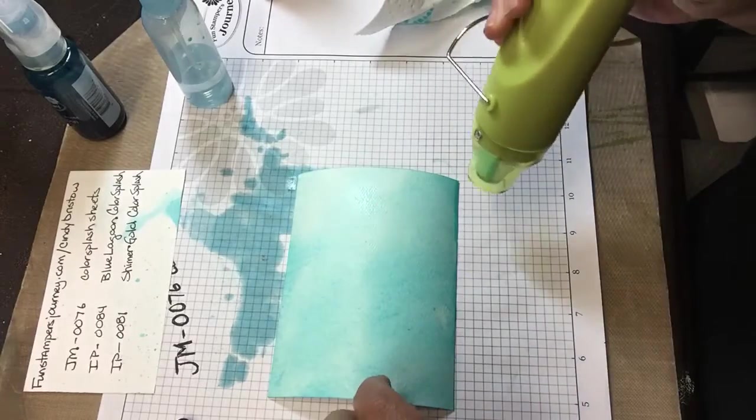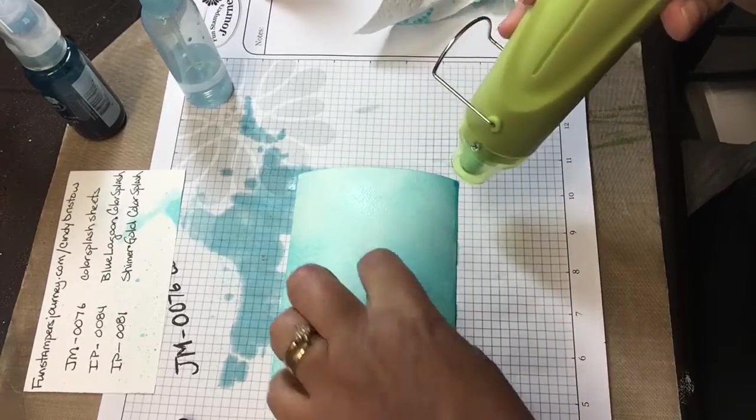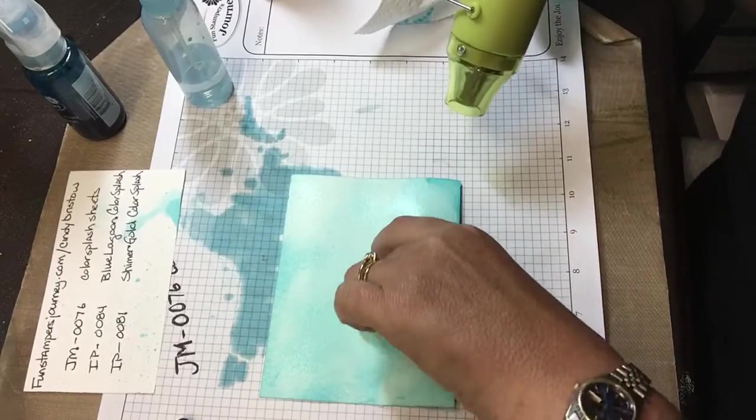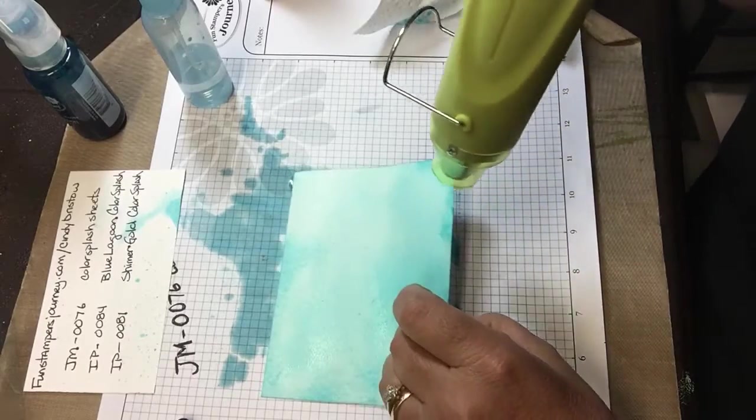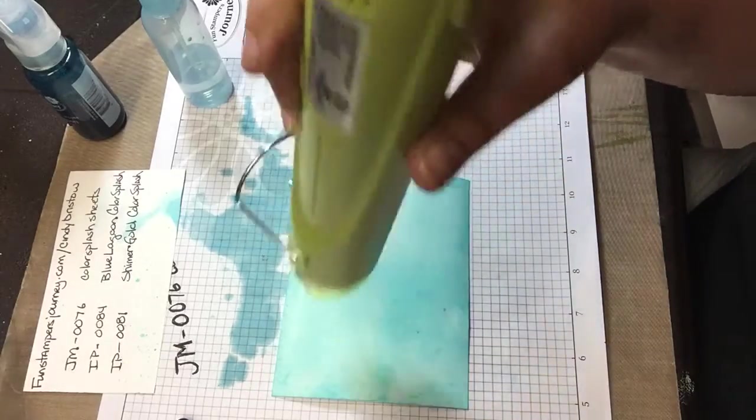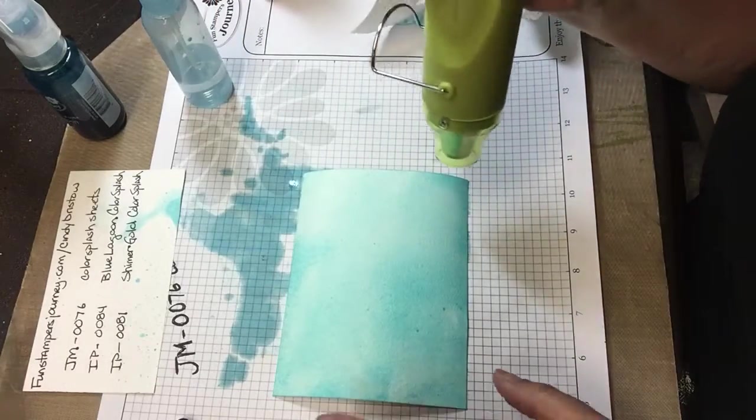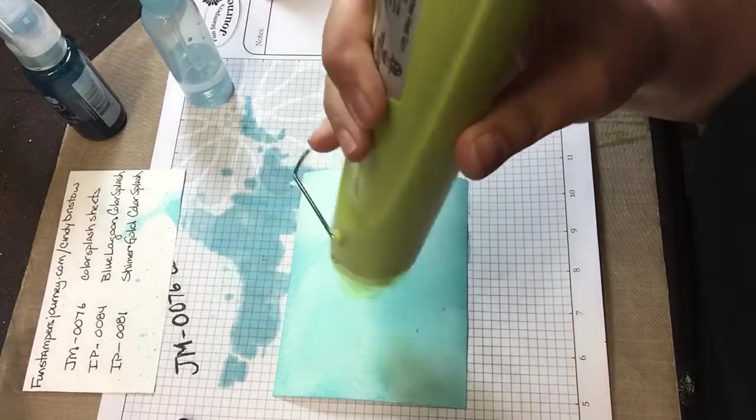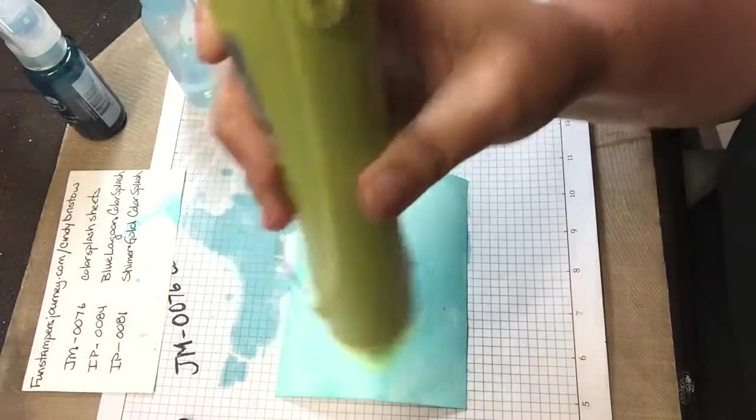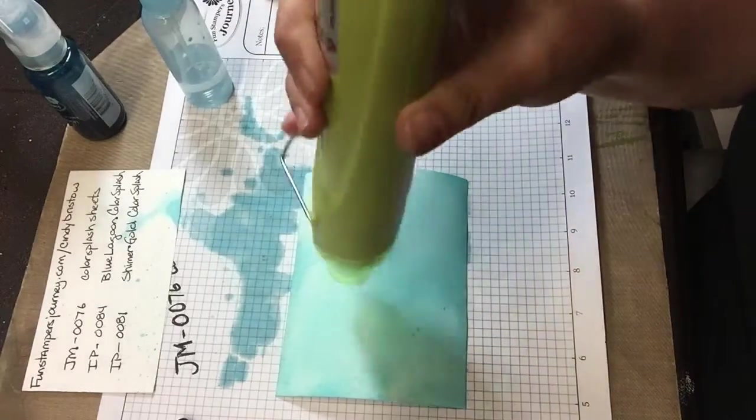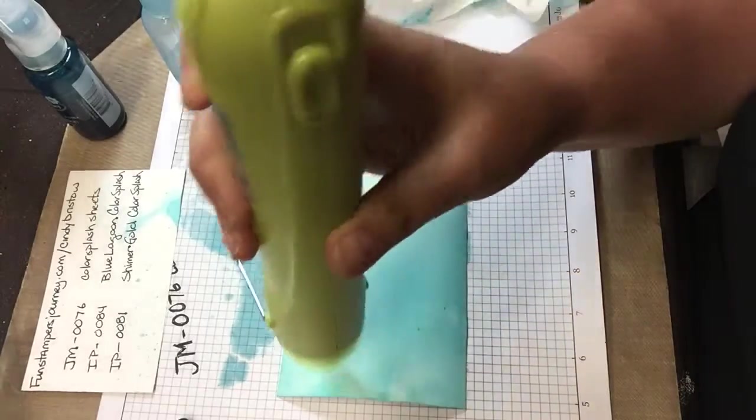So I take a clear sheet of paper, I wipe it off and put it out of the way. Now the other thing that you can do is you can turn your heat gun on it and you can kind of chase your water around a little bit. But I like drying my watercolor backgrounds before I go on to the next step.